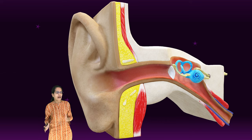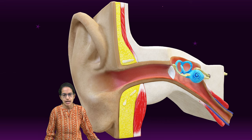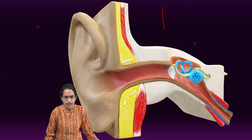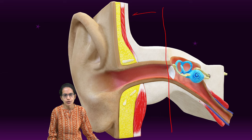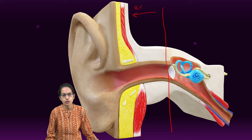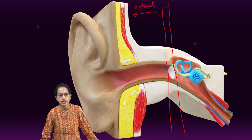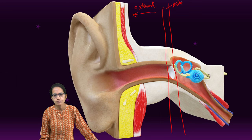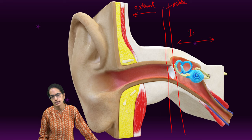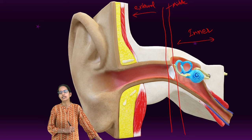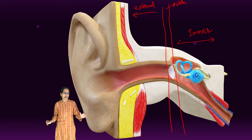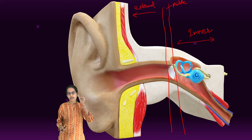Here we have a 3D model to understand the ear structure. If I classify this model carefully, the section beyond this is what is known as the external ear. The white segment that you can see depicts the middle ear, and then towards the inner side we have what is called the inner ear. Let's understand each of these segments one by one.